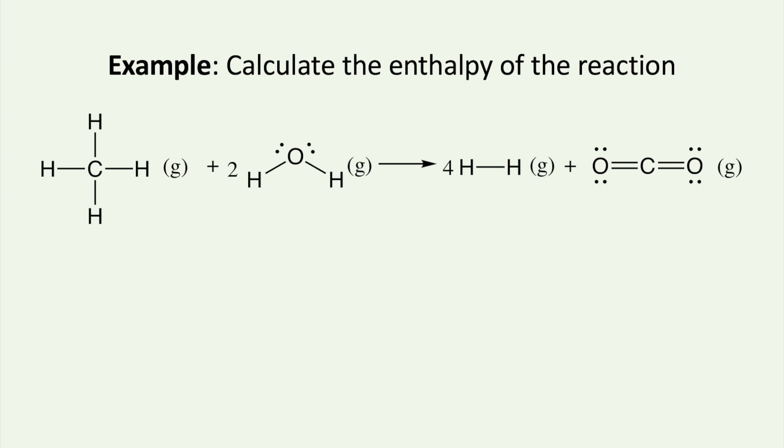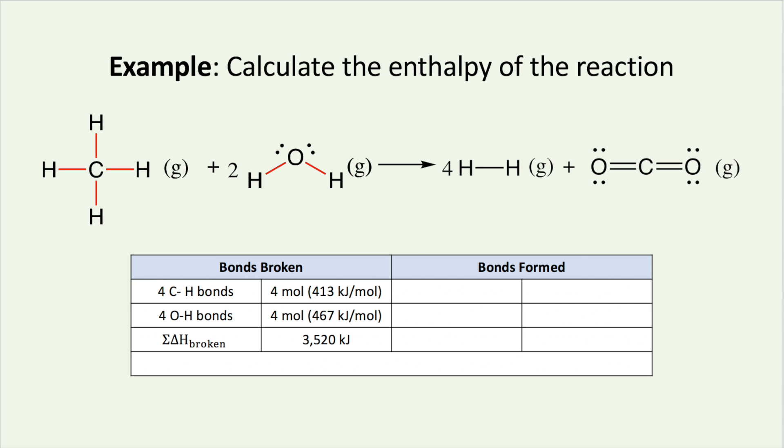Next, you want to calculate the sum of the bonds broken and bonds formed using the bond energy table. In this example, we have four carbon hydrogen bonds breaking and four oxygen hydrogen bonds breaking. The sum of the enthalpies for the bonds broken is 3520 kJ.